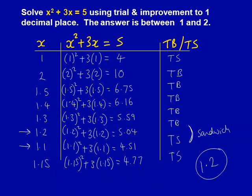Because 1.15 is still too small, our answer must be a little bit bigger than 1.15. Which one of the two with arrows by is bigger than 1.15? The answer is 1.2, which is bigger than 1.15. We have now done it.